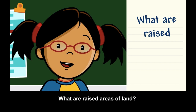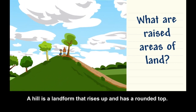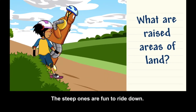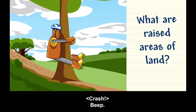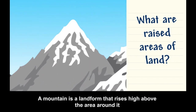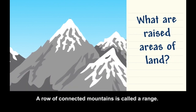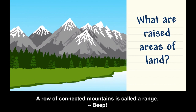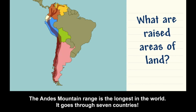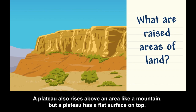What are raised areas of land? A hill is a landform that rises up and has a rounded top. The steep ones are fun to ride down. Be careful, Moby! A mountain is a landform that rises high above the area around it and has a peak at the top. A row of connected mountains is called a range. The Andes mountain range is the longest in the world — it goes through seven countries. A plateau also rises above an area like a mountain, but a plateau has a flat surface on top.